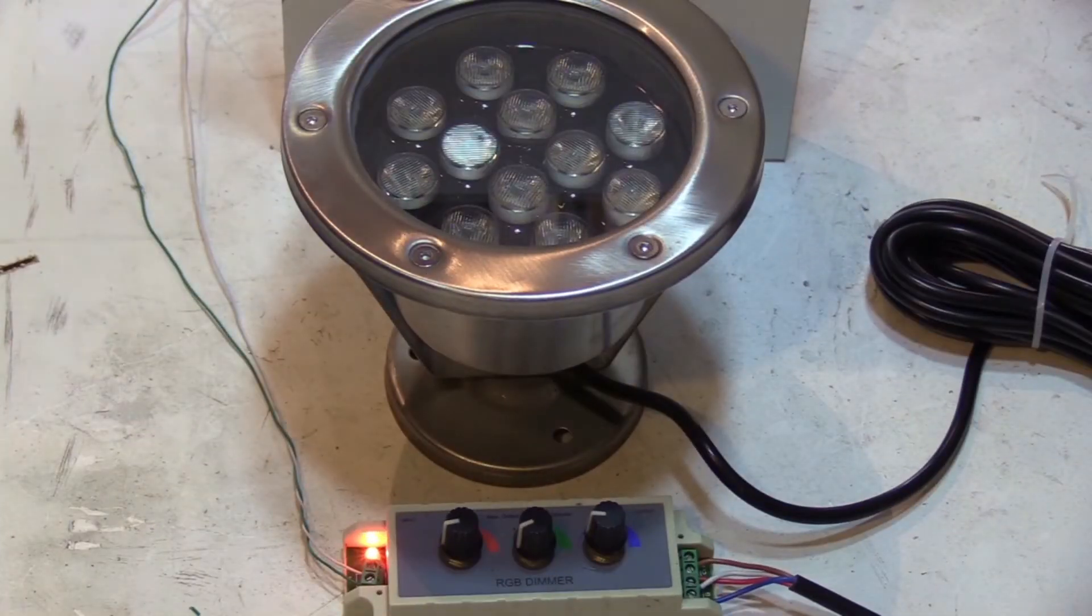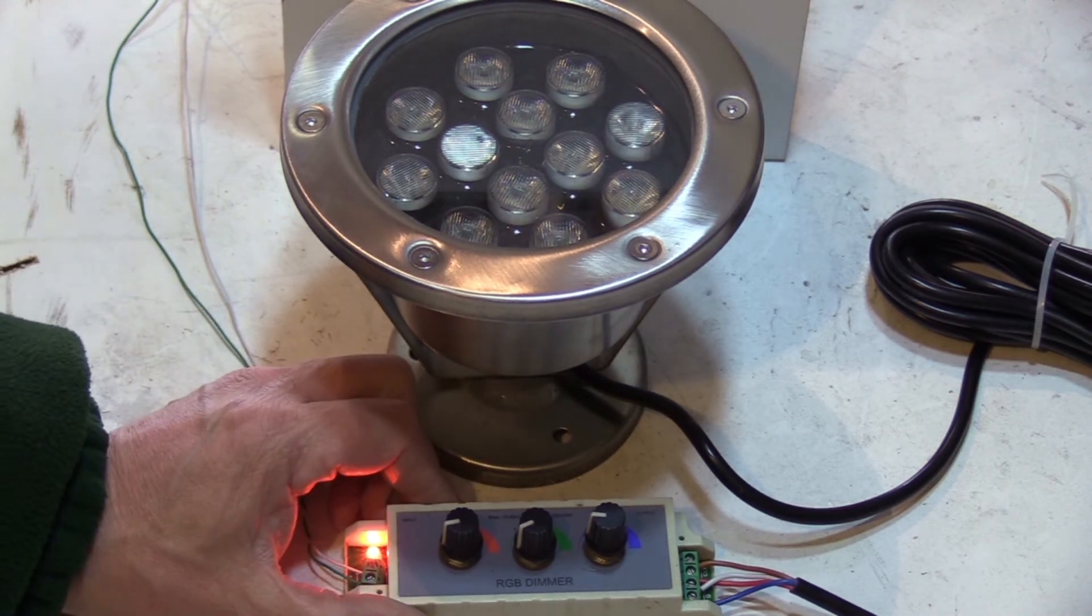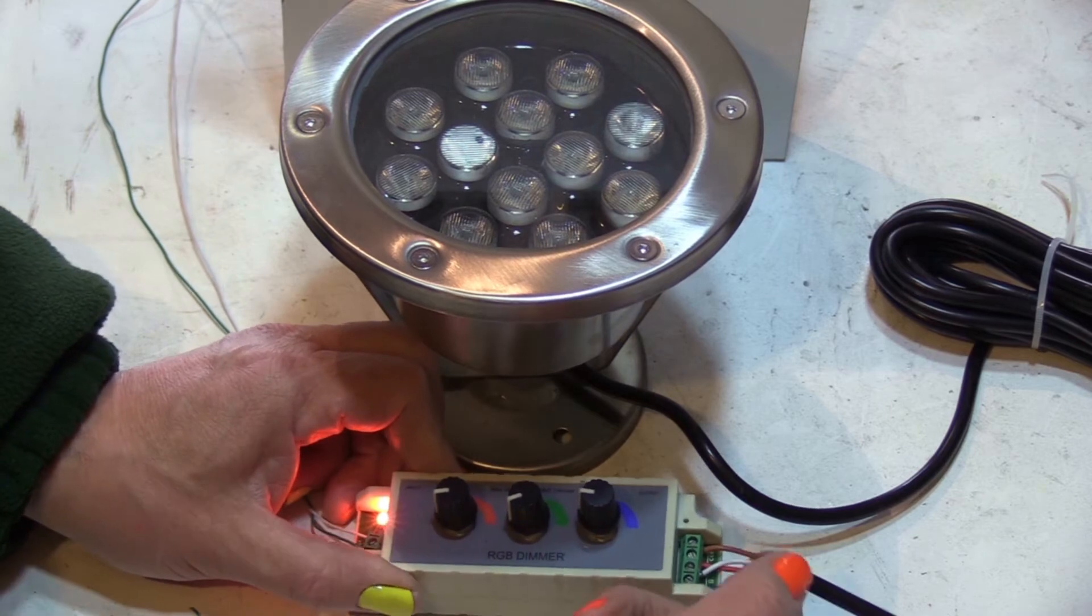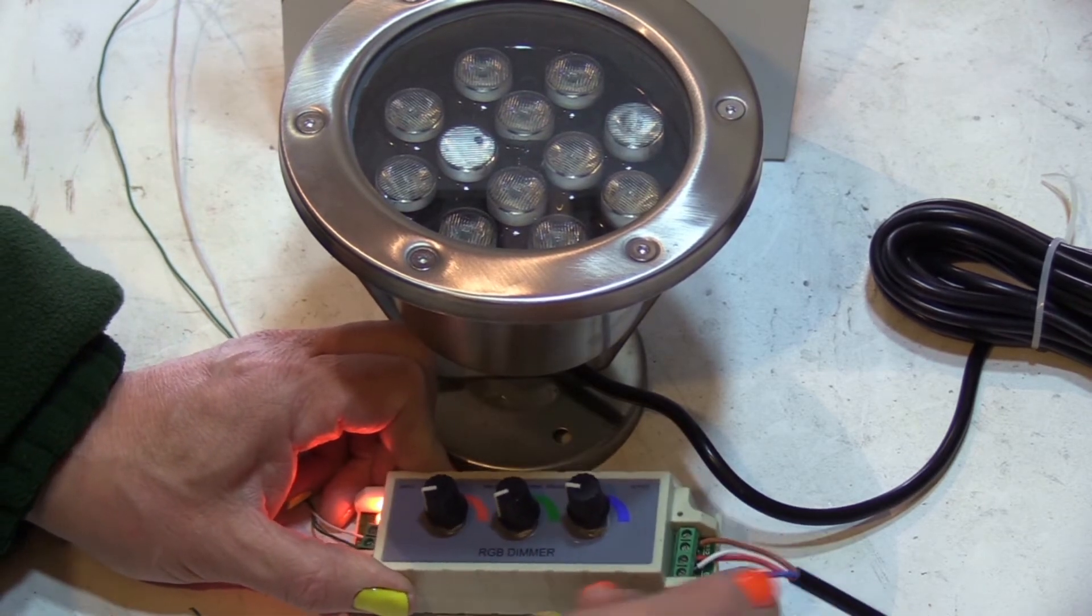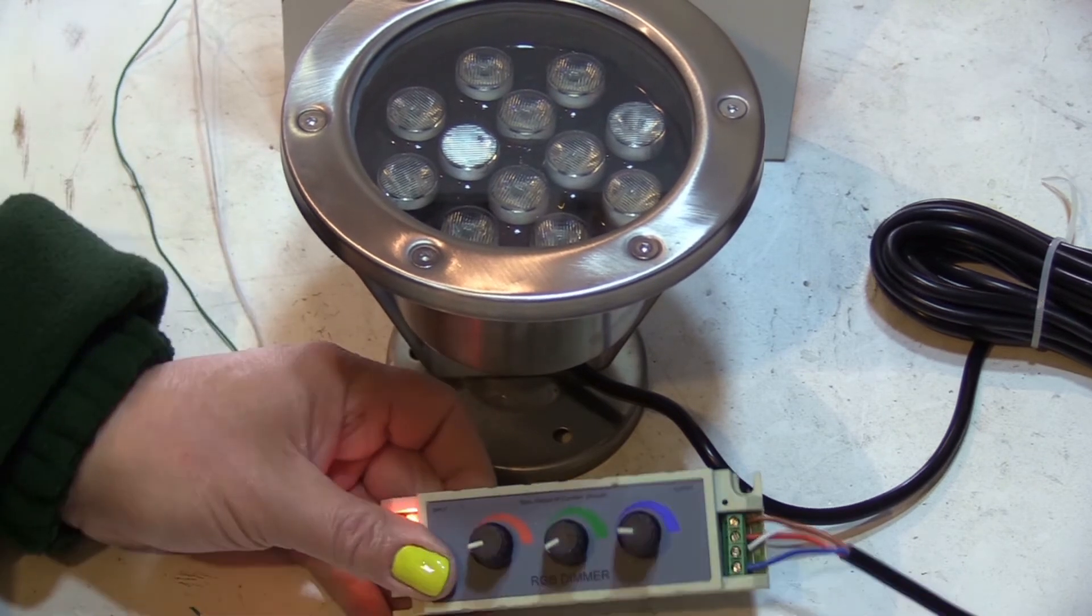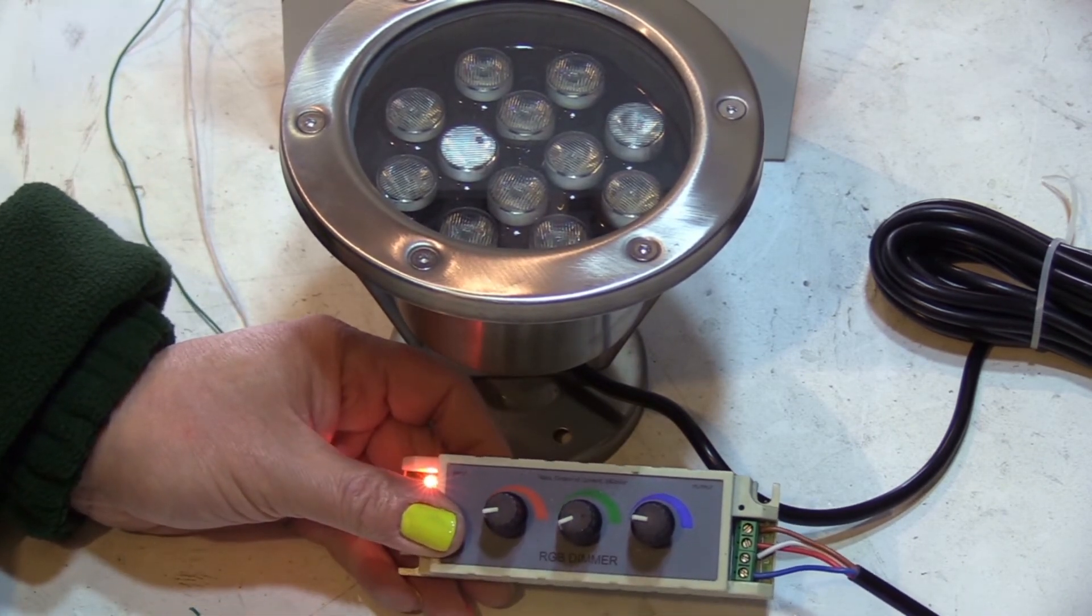This light is actually waterproof and it's often used in fountains. We still have the same controller. If you know, on the controller this light has four wires, one for red, let's turn it that way, one for red, one for green, one for blue, and one for common. That's why it has four.